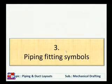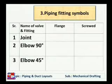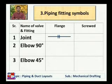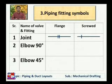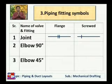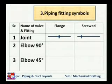Now pipe fitting symbols — the fitting symbols which are used in piping. Suppose a joint is there and two pipes are joined with a simple joint, it is shown by a specific symbol. If they are joined with a flange, two lines are drawn. If they are screwed — meaning threads are there — then one line is drawn. Flange means two expanded portions are joined together; screwed means threads are used to join two pipes.